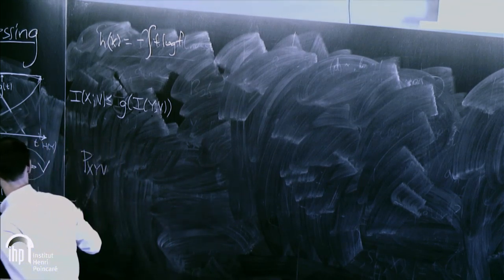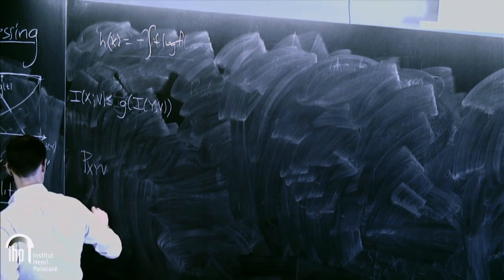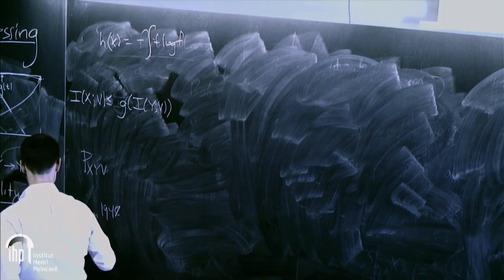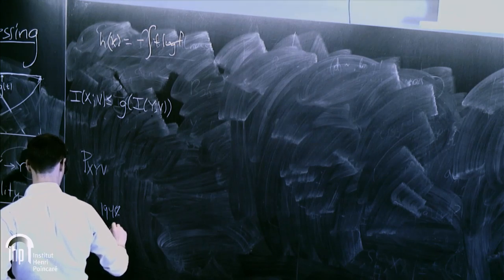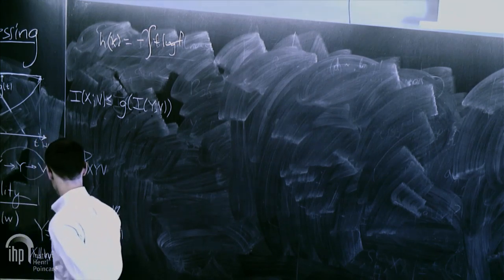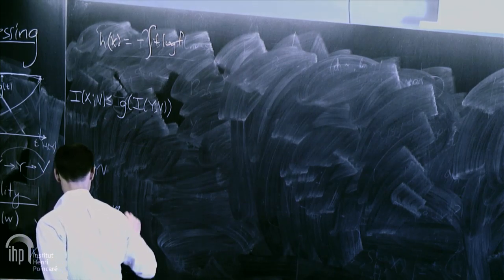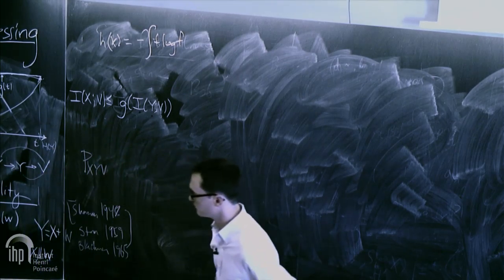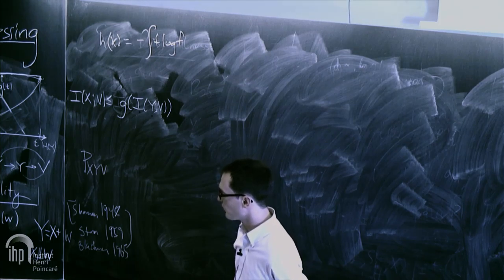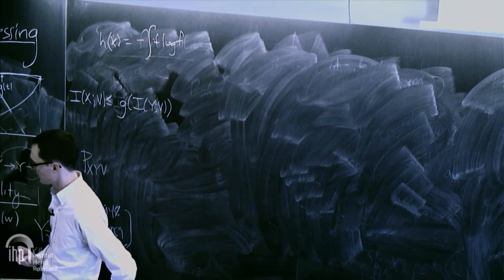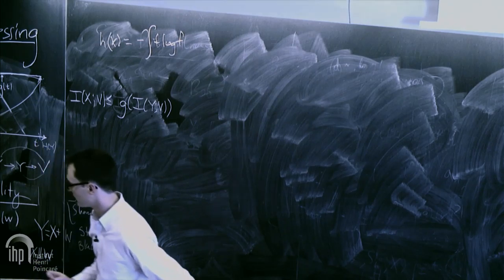This is from Shannon 1948, Stamm 1959, Blachman 1965. The entropy power inequality is related to Brunn-Minkowski, since you can think of entropy powers as analogous to volumes of sets. It's arguably the only truly useful inequality in information theory that doesn't follow from chain rule or similar basic tools.